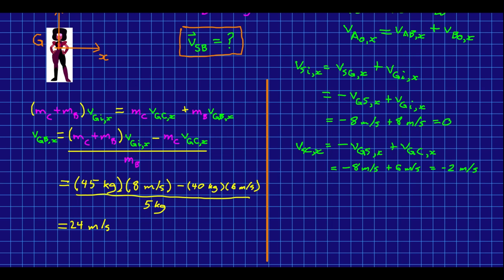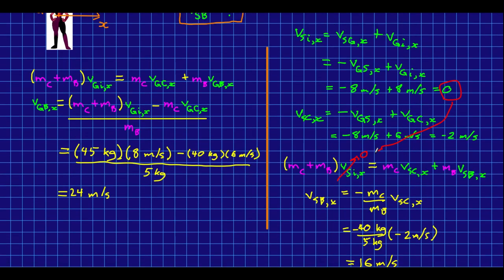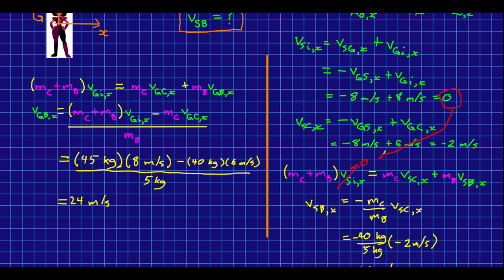And so now we have everything translated into Steven's reference frame and we can work there. So first, we can write conservation of momentum. Notice that this side of the equation is just zero.